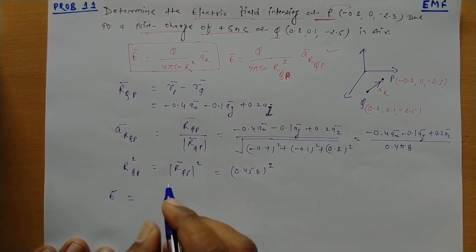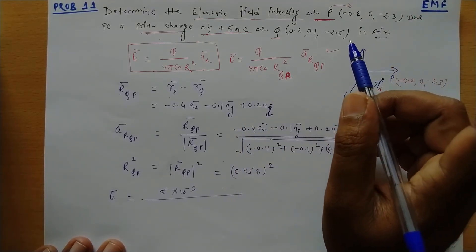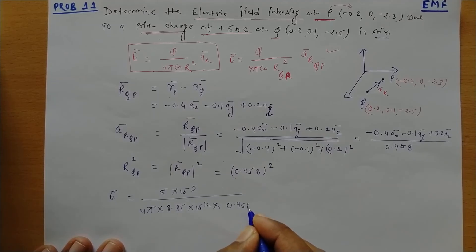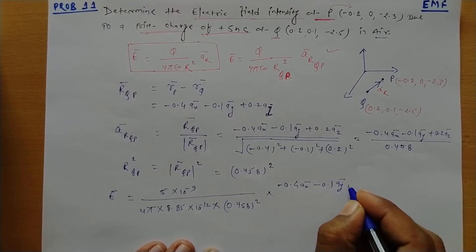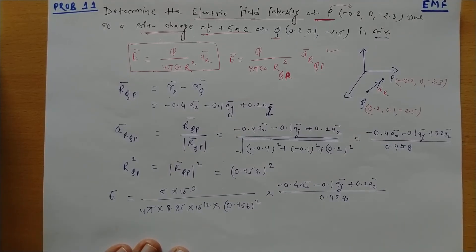Now we will put these values into the electric field intensity expression. Q is 5 nano coulombs, so we put 5 × 10⁻⁹ over 4πε₀, times R_QP squared which is 0.45², times the unit vector (-0.4 ax - 0.1 ay + 0.2 az) divided by 0.458. We have now put all the values into the expression. You can check by the calculations.